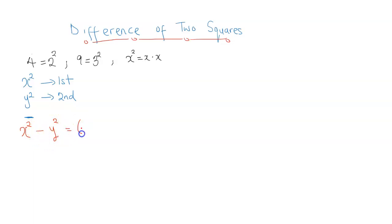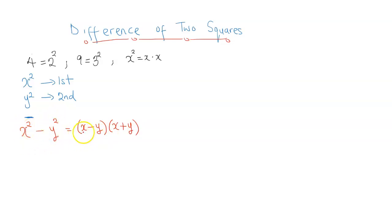So this is going to be x minus y in parentheses, then x plus y. This is the difference of two squares: x squared minus y squared equals x minus y times x plus y. Now this has lots and lots of applications, so let's apply this to factorize one or two problems.